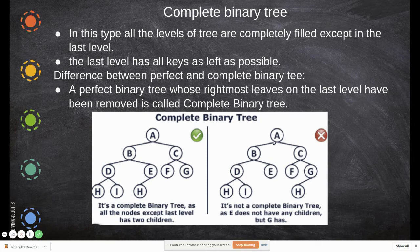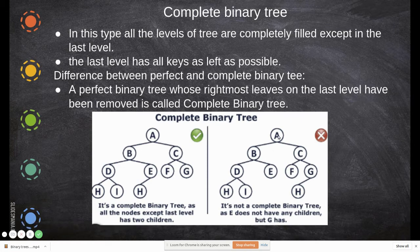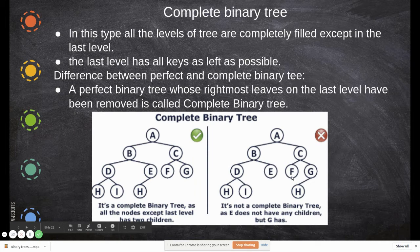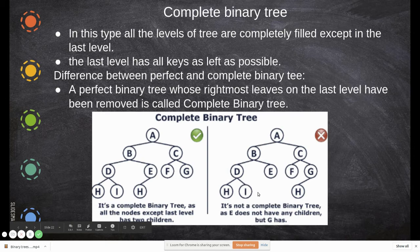This is wrong because the left child here is not filled, yet there is a right child present. After the root node, these two positions have to be filled left-to-right, then after B these two, then D or E must have the left child first. Without filling the children of E and F, having a child further down makes this not a complete binary tree.